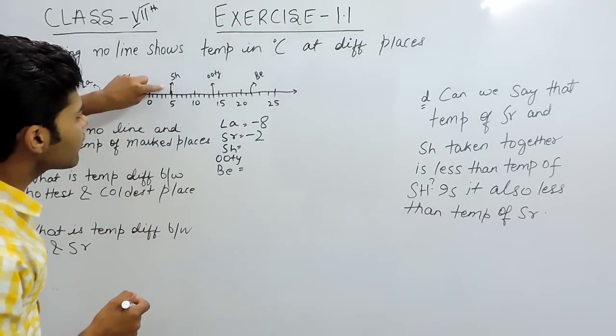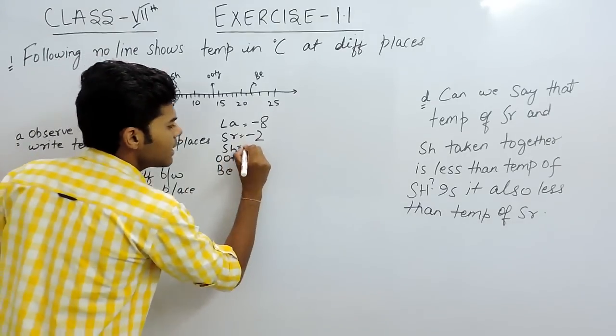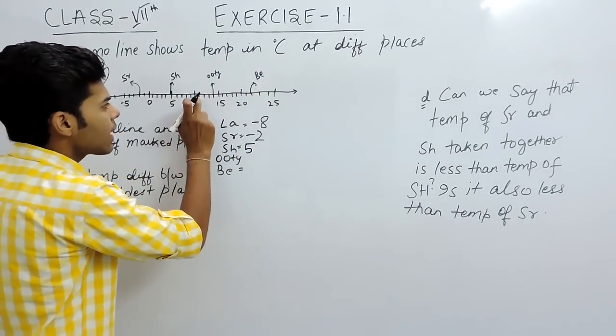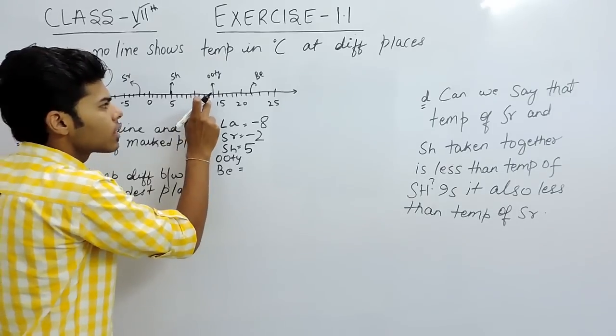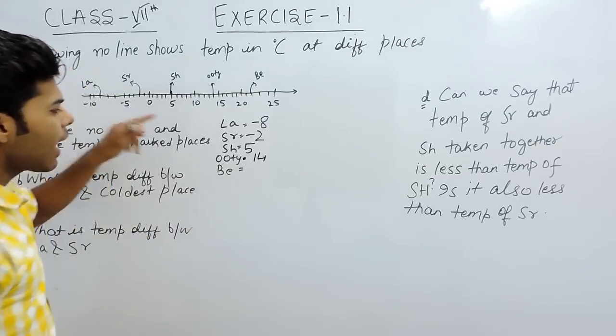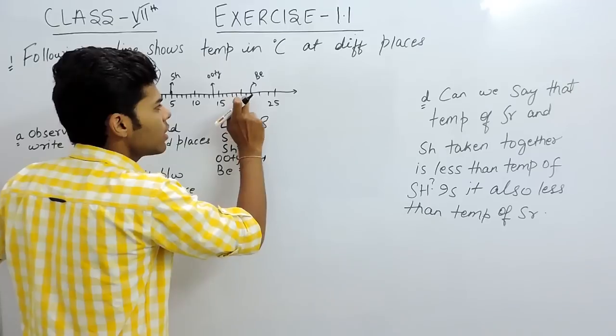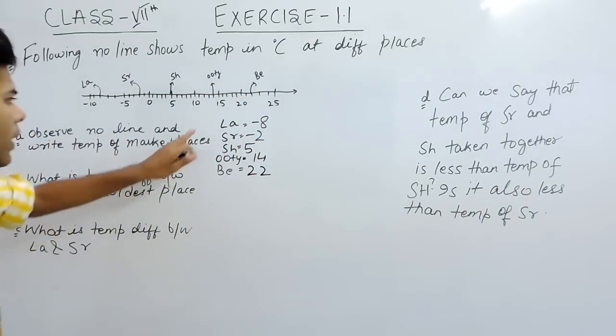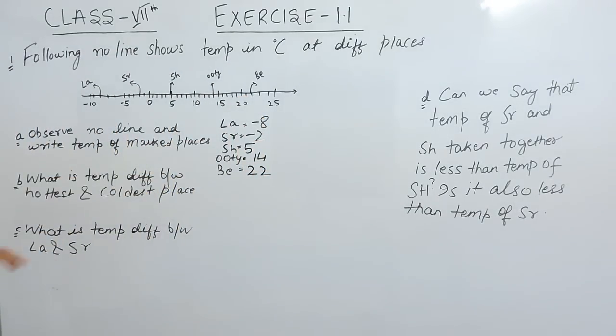Now, SH is on the right hand side, on the 5 mark. So directly the answer will be 5. Now for UT, we will go from 10: that is 11, 12, 13, 14. So it will be 14. And last BE: 20, 21, 22. So that will be the first part.